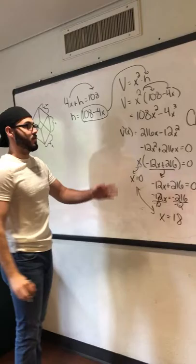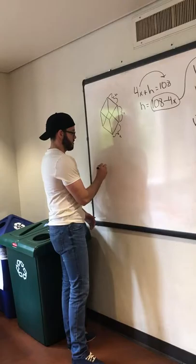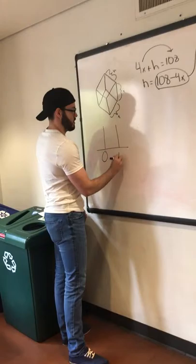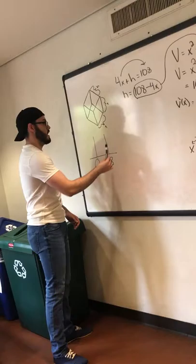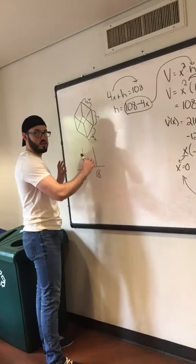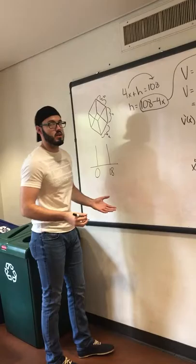Critical numbers would be 0 and 18. So now that we have our critical numbers, next thing to do would be to make a sign chart. So sign chart, we have 0 and 18. Now we need to plug in numbers below 0, in between 0 and 18, and after 18, so we can see how the function is either increasing or decreasing in these different places.